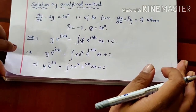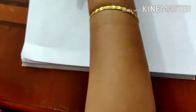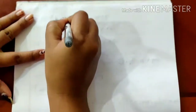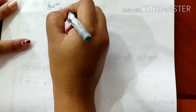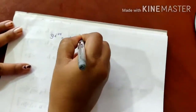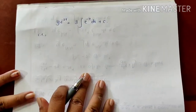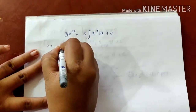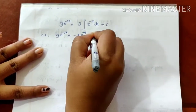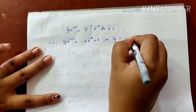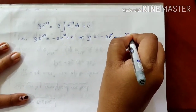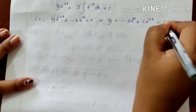LHS as it is: y into e raised to minus 2x. Simplifying the right side gives minus 3 e raised to minus x plus c. Therefore y equals minus 3 into e raised to x plus c into e raised to 2x, which is the general solution.